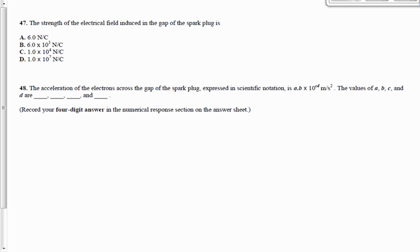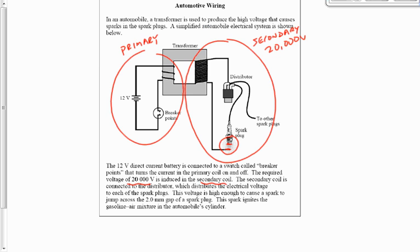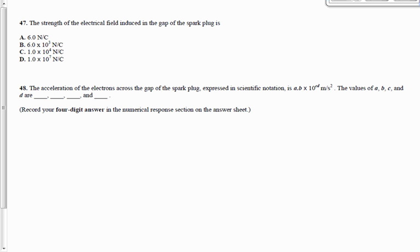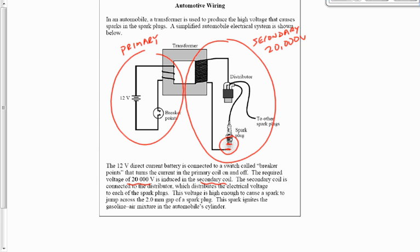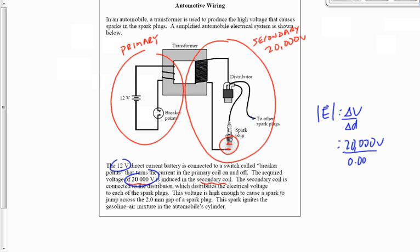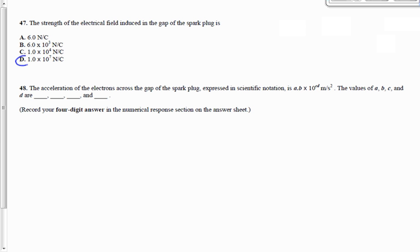Question number 47 asks us for the strength of the electric field induced in the gap of the spark plug. We have two potential differences — 20,000 volts and 12 volts — but the one we're concerned with is the potential difference in the secondary coil, 20,000 volts. We divide that by the distance of two millimeters, so it's 20,000 volts divided by 0.002 meters, and that gives us 1.0 times 10 to the 7.